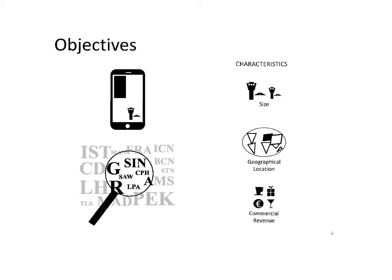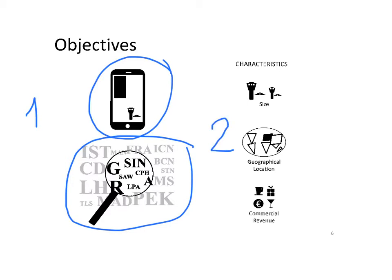Two main objectives are defined for this research. First is, by looking at those mobile applications, which we just described that can be considered as innovation, to define which airports are real innovators. And second objective is to understand the characteristics of those innovator airports, such as the airport size, geographical location, and importantly, commercial revenue.